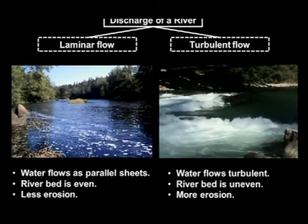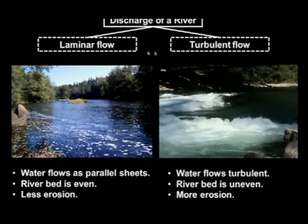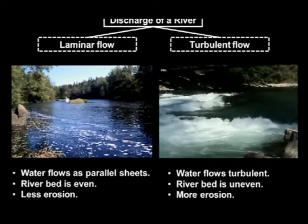When we look at the discharge of a river, it's very important to consider two types of discharge. We've got laminar flow on one side and turbulent flow on the other. You must know the difference between laminar flow and turbulent flow, why we get each type, and the processes that occur in these types of flows.